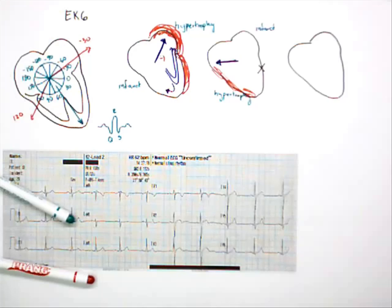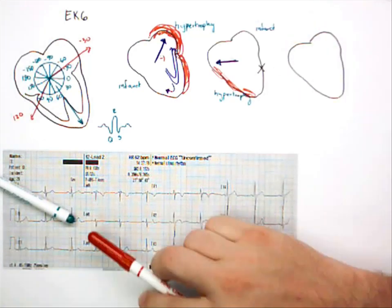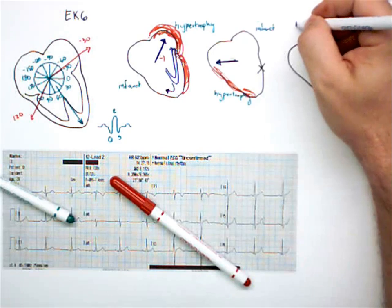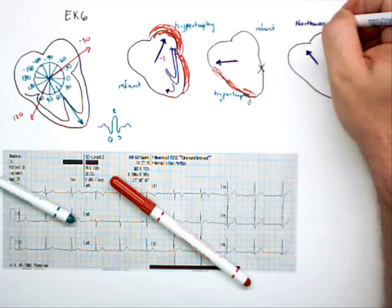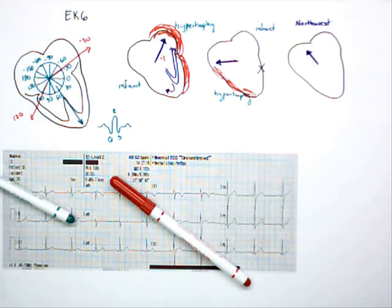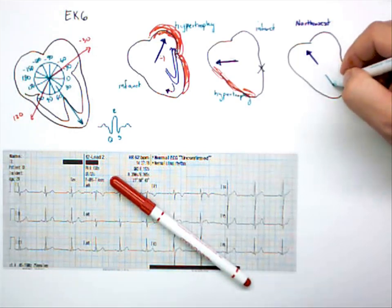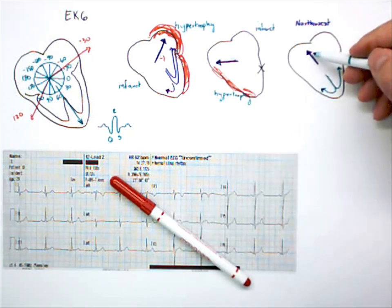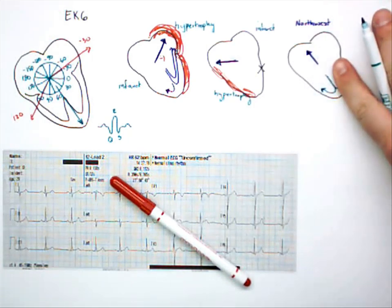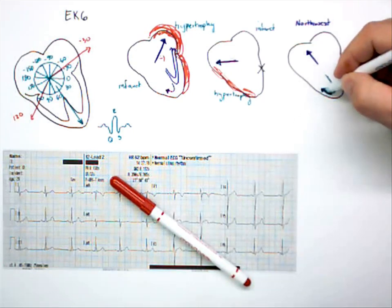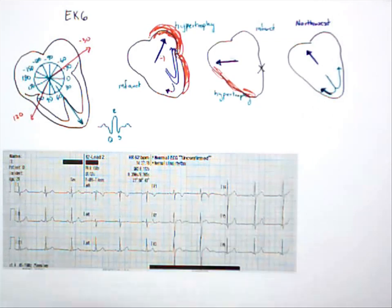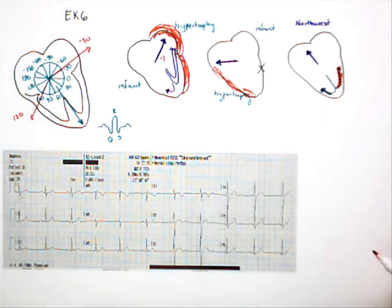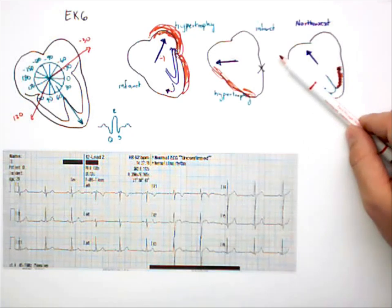I want to do one extreme, and this is called the northwest axis. This is something you definitely don't ever want to see when you look over at your EKG trace. The only way to get this axis here would be to remove this left-side muscle completely — essentially if there's a massive heart attack, making that area non-functional, then our QRS axis shifts to the northwest.